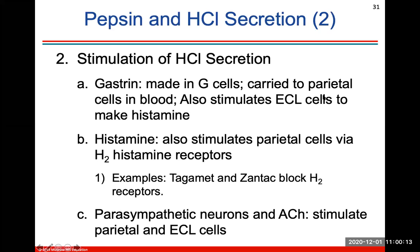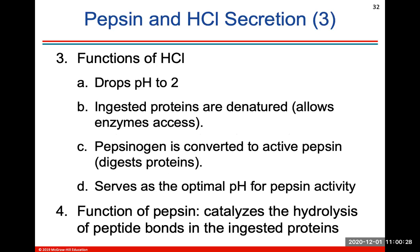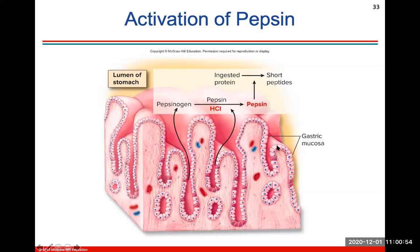Regarding pepsin and hydrochloric acid secretion: gastrin is made in G cells, carried to parietal cells in the blood, and stimulates ECL cells to make histamine. Your chief cells create pepsinogen, which will be converted to pepsin — the active form that helps to digest proteins. Pepsin catalyzes the hydrolysis of peptide bonds in ingested protein, breaking apart large proteins into shorter peptide chains.